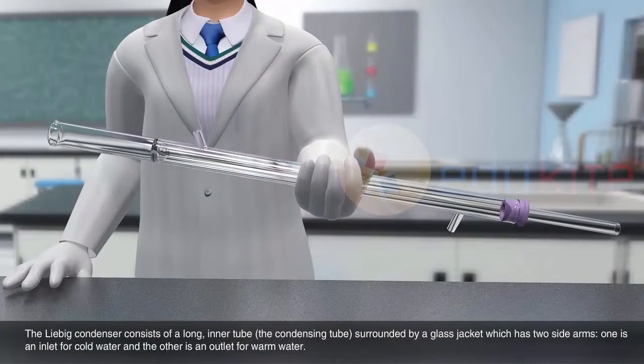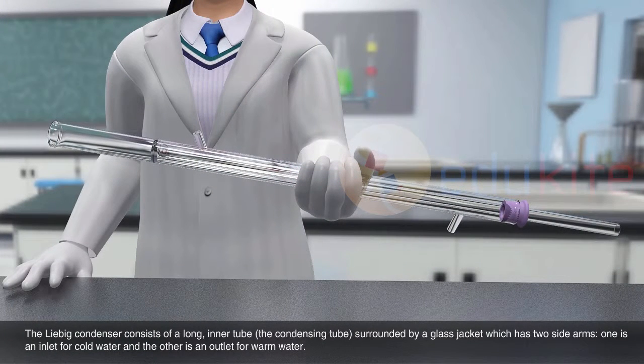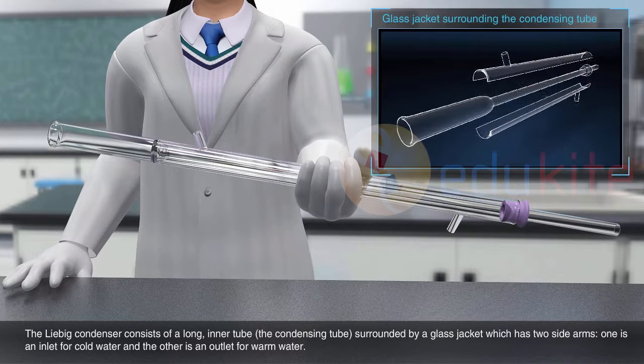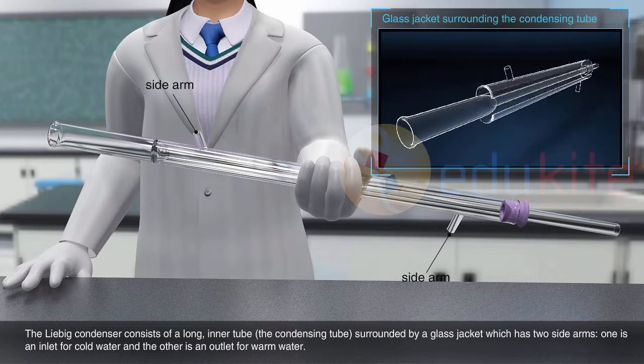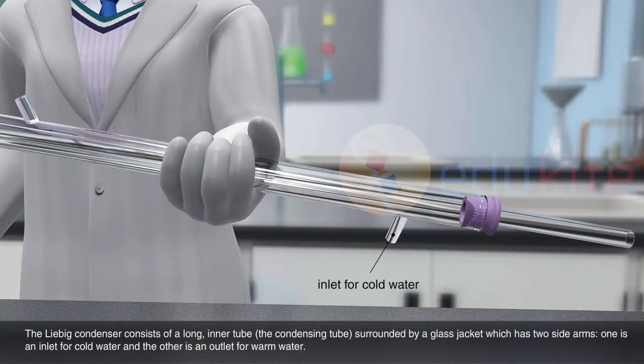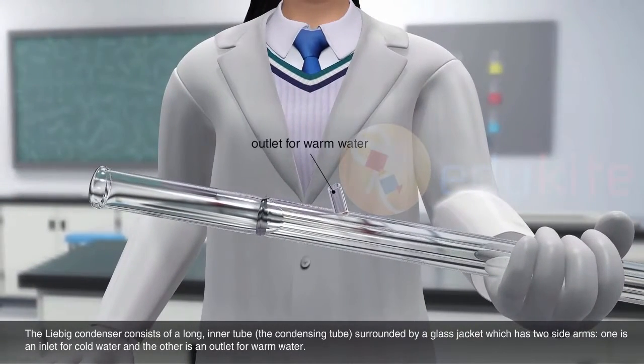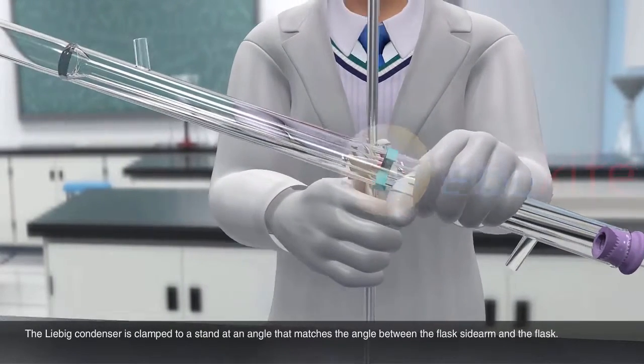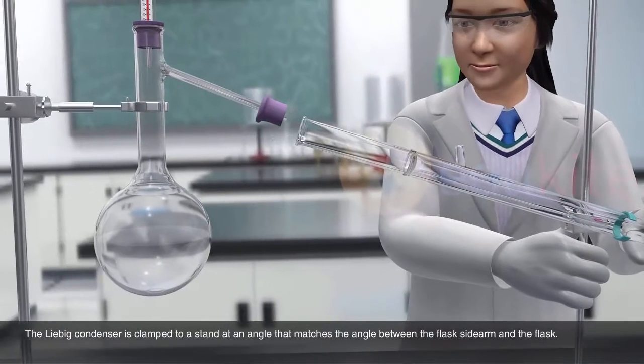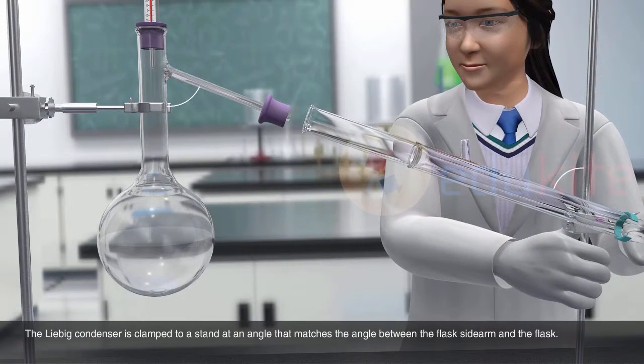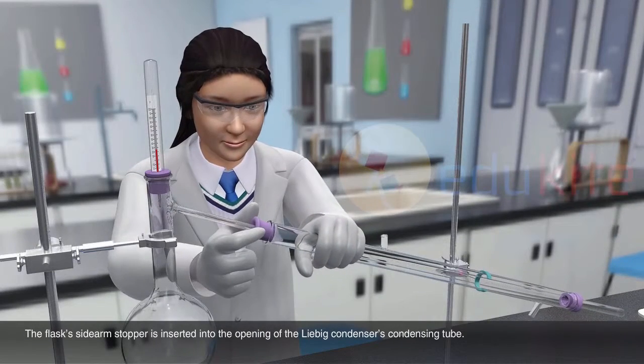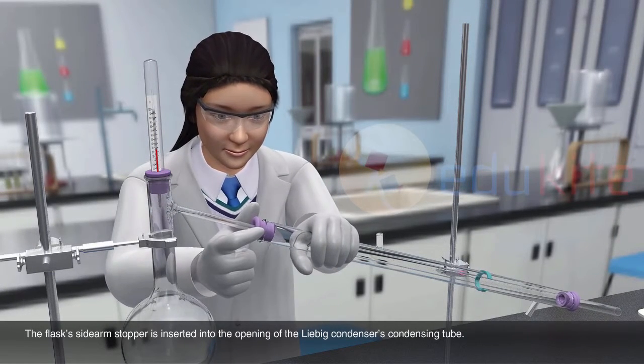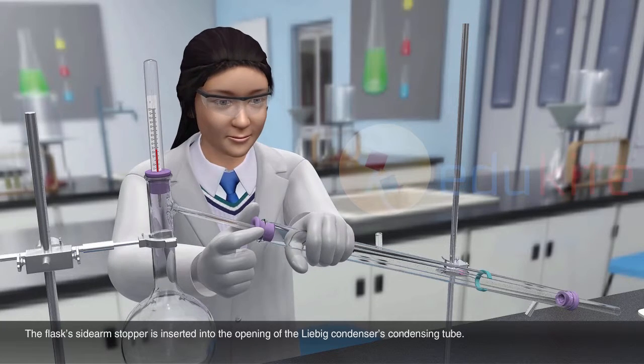The Liebig condenser consists of a long inner tube or condensing tube surrounded by a glass jacket which has two side arms. One is an inlet for cold water and the other is an outlet for warm water. The Liebig condenser is clamped to a stand at an angle that matches the angle of the flask's side arm. The flask's side arm stopper is inserted into the opening of the Liebig condenser's condensing tube.